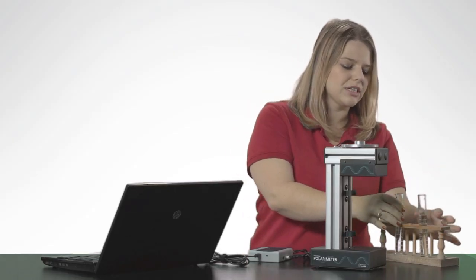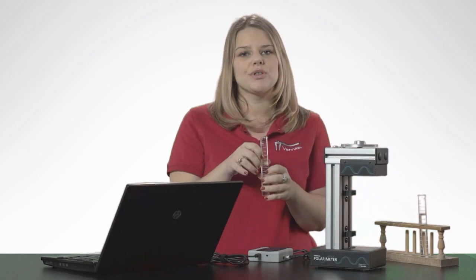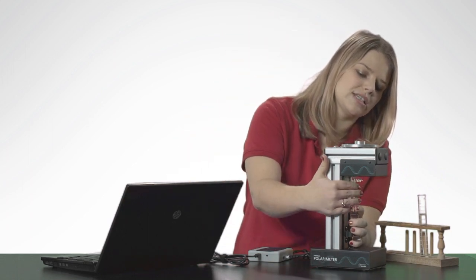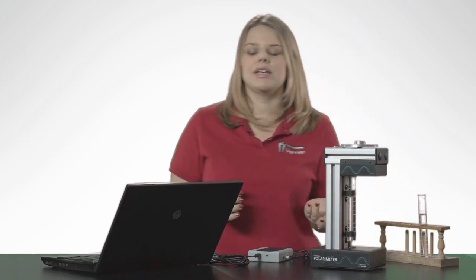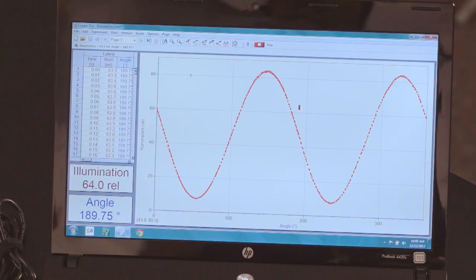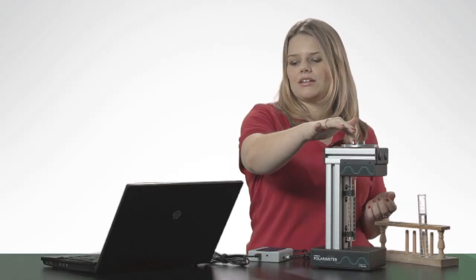Now I'm ready for my optically active sample, which is a 30% sucrose solution. I've also filled this one to 10 centimeters. Place it in the polarimeter, begin data collection, and rotate the analyzer.